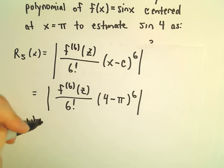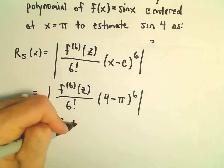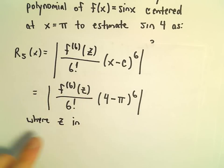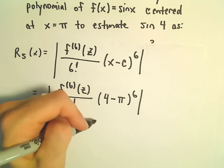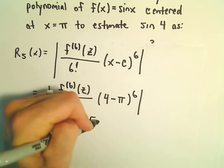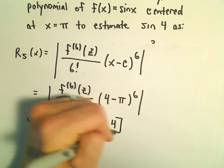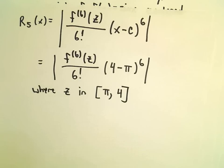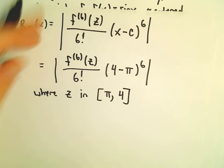Again, where z is a number in between the interval, so from 4 to pi, or equivalently from pi to 4. So that's going to be our interval under consideration.